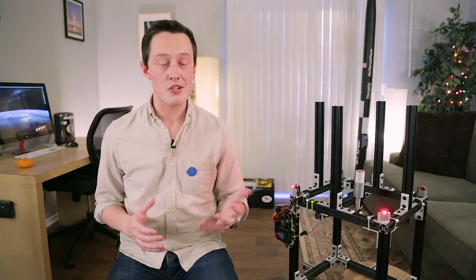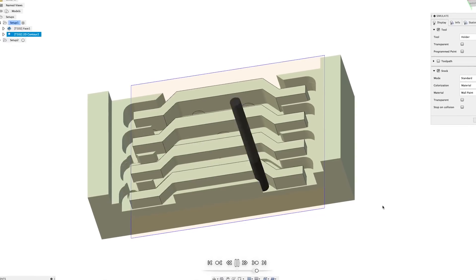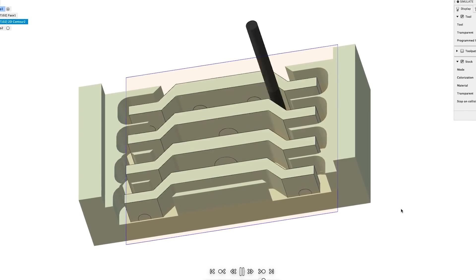After the facing operation it was time to carve out the brackets and for this we'll use a contour operation. This will etch out the sides of the part super efficiently just leaving the brackets without any extra cutting needed.